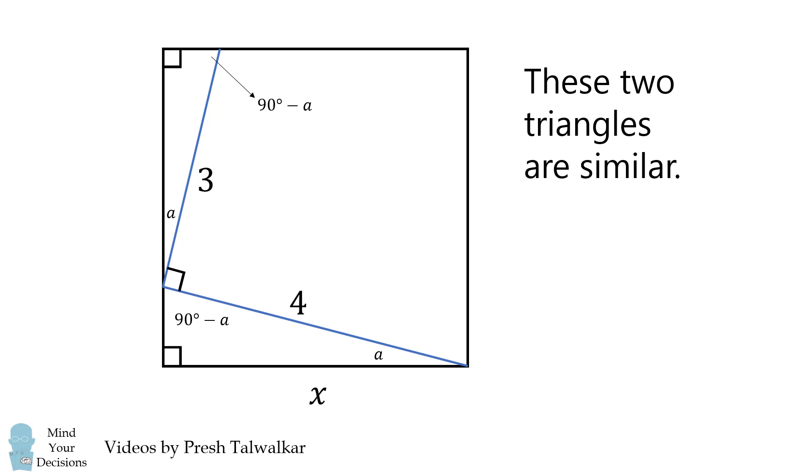But how does that help us solve the problem? Well, let's label the shorter side of this triangle as Y. Since the entire side of the square is equal to X, this distance will be X minus Y.